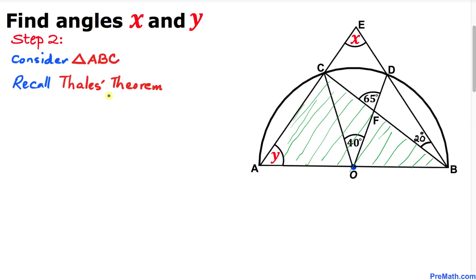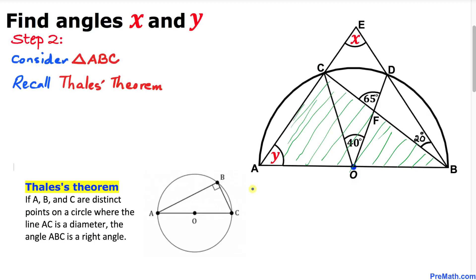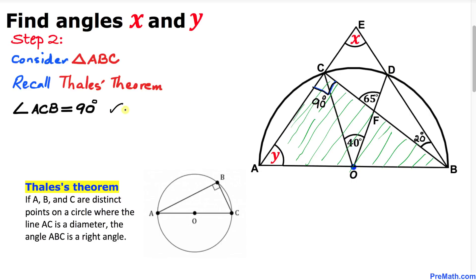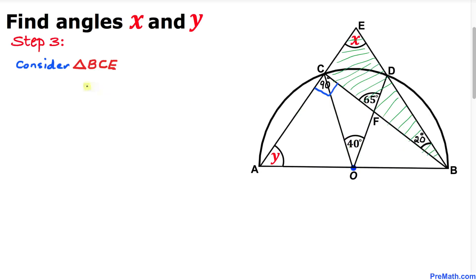Now let's focus on triangle ABC and recall Thales' theorem. According to this theorem, angle ACB is 90 degrees, as you can see over here.